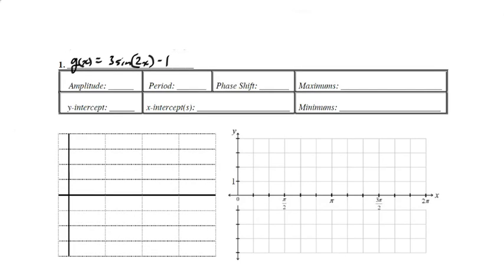Alright, so the two hardest parts about graphing a trigonometric function is when there is a period change and a phase shift. Now this one does not have a phase shift. How do I know? There is no H. There's no number inside of the parentheses subtracting. So we just have a period change, which is not that bad.